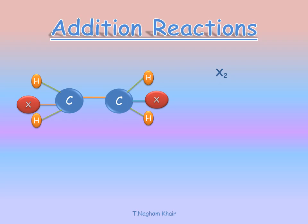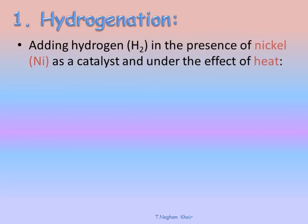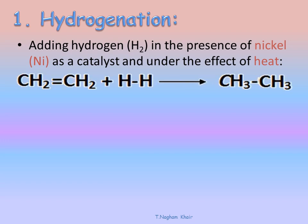What are these atoms? Let us see the types of addition reactions. The first kind is the hydrogenation reaction. Hydrogenation is a reaction with hydrogen, H2, in the presence of a catalyst, which is nickel, and under the effect of heat. Here we have ethene CH2=CH2 plus H2 giving CH3-CH3.